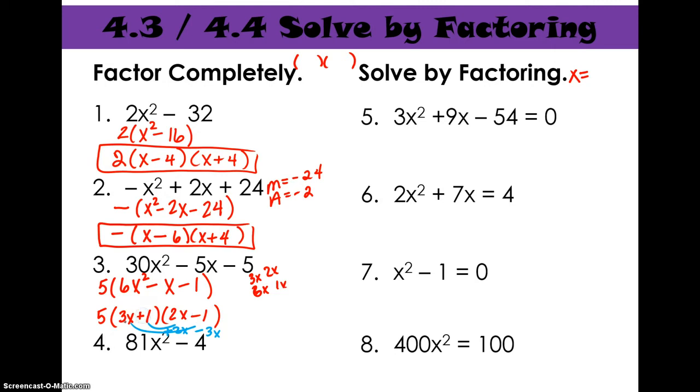Number four. There is no GCF there, so we're good. And you will hopefully notice very quickly that those are both perfect squares. This is 9 squared, this is 2 squared. And so this factors into 9x plus 2, 9x minus 2. Great. Those are all factoring. So notice all the answers are sets of parentheses. If you've had a GCF, then make sure that that stays out front.